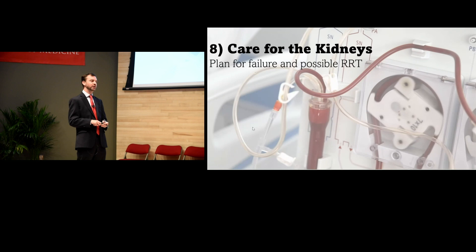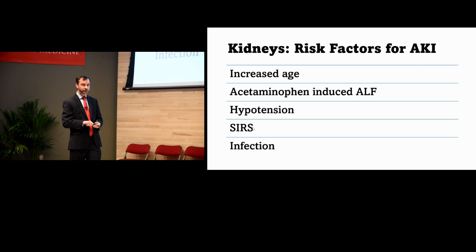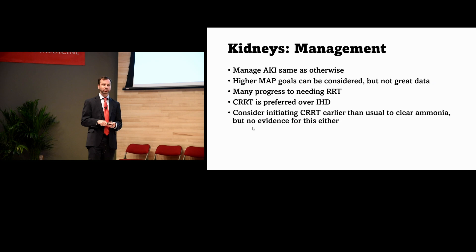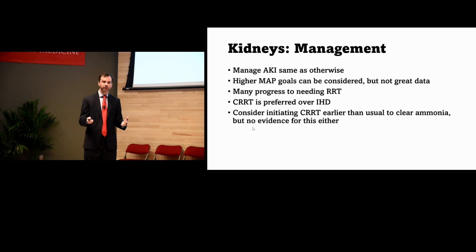Tip number eight: the kidneys. Many of these patients progress to needing renal replacement therapy. Risk factors for AKI in acute liver failure include acetaminophen as the cause, plus the typical causes of AKI generally. Management is basically the same as for the average critical care patient, with some argument for a higher MAP goal to protect the kidneys, though the data is not great.